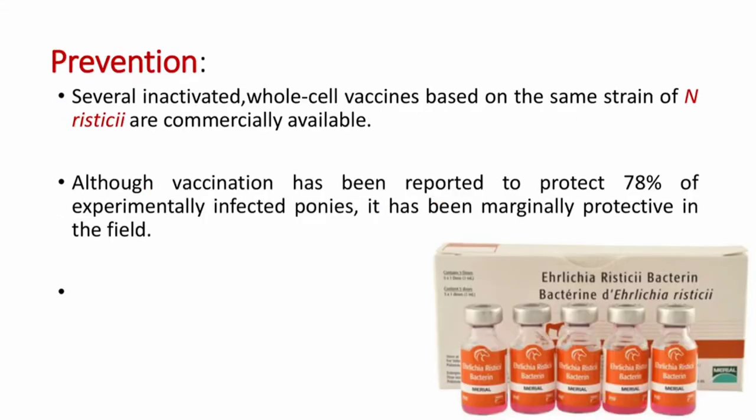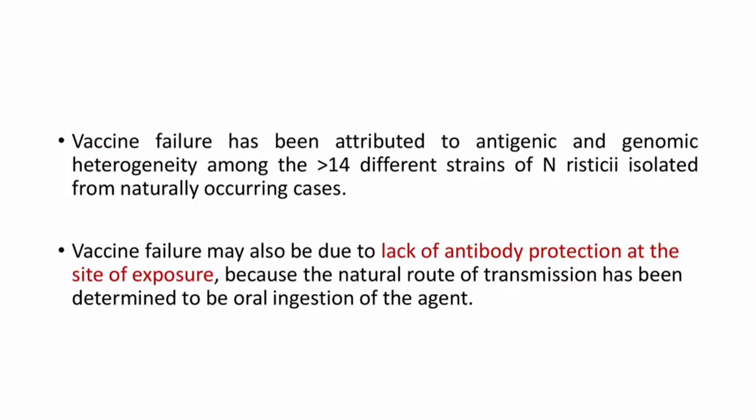Several inactivated whole-cell vaccines based on the same strain of Neorickettsia risticii are commercially available. Although vaccination has been reported to protect 70% of experimentally infected ponies, it has been marginally protective in the field. Vaccine failure has been attributed to antigenic and genomic heterogeneity among more than 14 different strains of Neorickettsia risticii isolated from naturally occurring cases, as well as lack of antibody protection at the site of exposure.